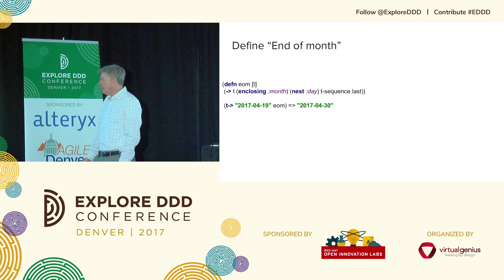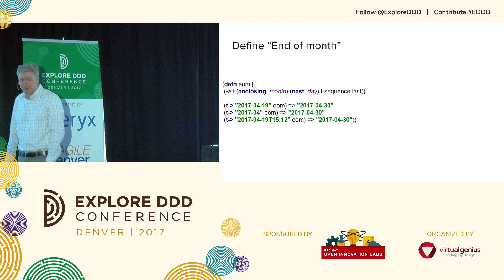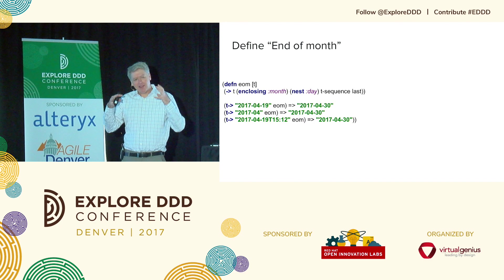So end of month: if you put in April 19th you get April 30th. If you just put April in, you get April 30th. If you put in a specific time, you get April 30th. There's an end-of-month function, and what I'm getting at is you can create those by composing these pieces.